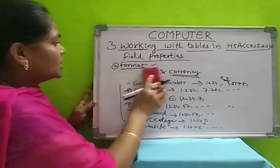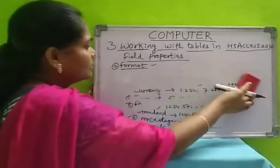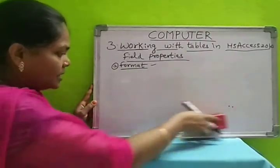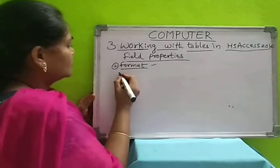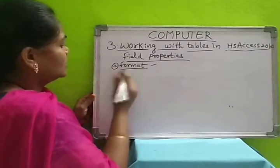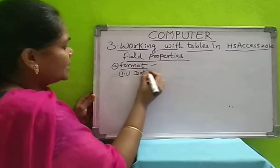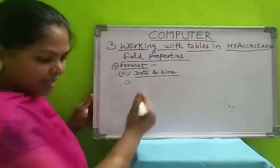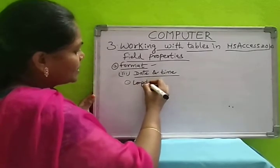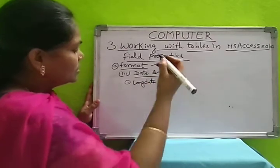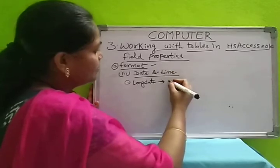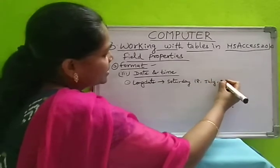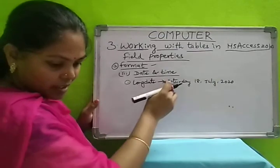In format, the third type is date and time. For date and time, we can select long date, short date, or medium date. Long date means, for example, Saturday the 18th of July 2020 — displayed in full. If you select this format, that is how the date will be displayed in the column.